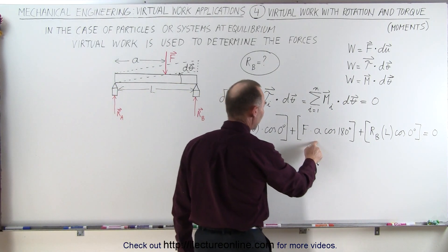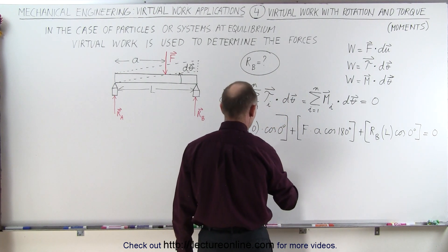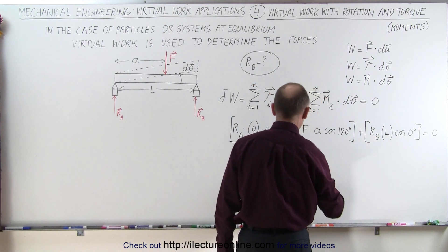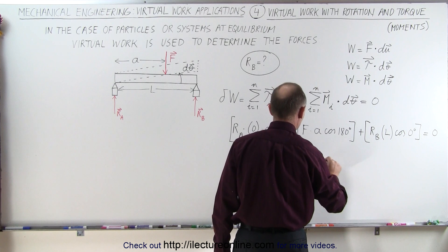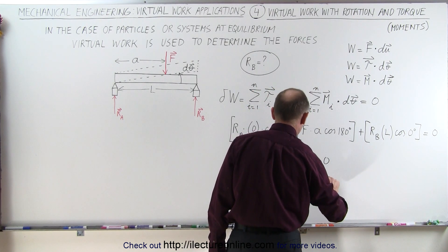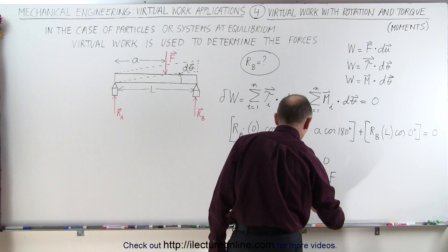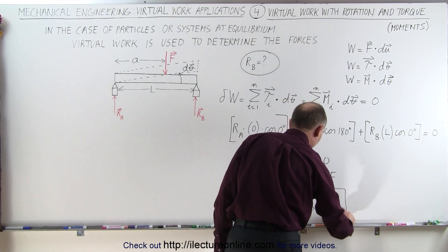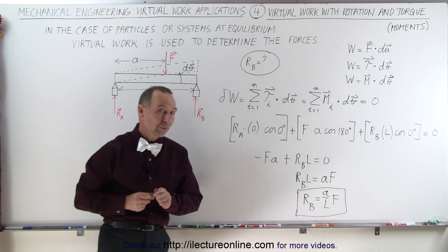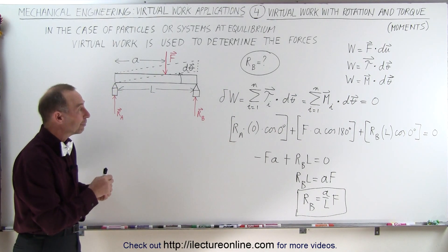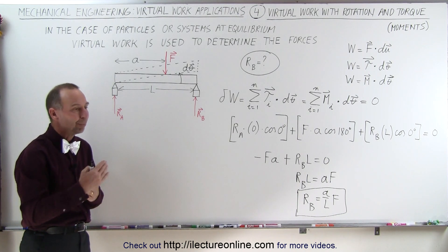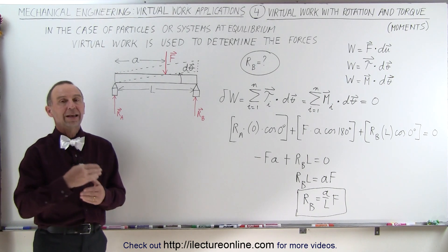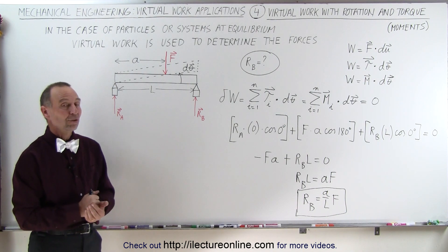So the first term is zero. The cosine of 180 is minus one, so we get minus F times a. Plus the cosine of zero is one, so the reactionary force at B times L equals zero. Therefore R_B times L equals a times F, or the reactionary force at B equals (a / L) times F — which is the same result we got in the previous video, but using a different technique. This technique is very powerful for systems that can bend, rotate, or act in different ways. We can even use it on trusses to find forces in the members.